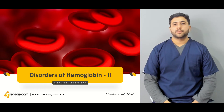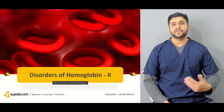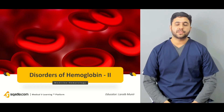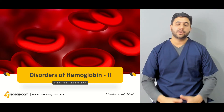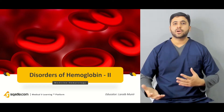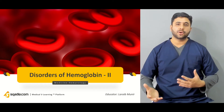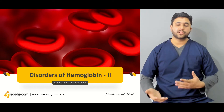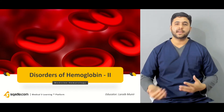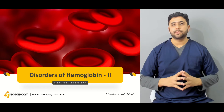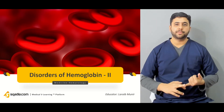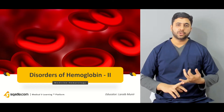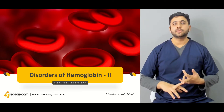We started off by discussing about the hemoglobinopathies. In the first part of our discussion, we started off by discussing about the normal physiology of hemoglobin — how it carries out oxygenation and transportation of oxygen. Then we talked about the various things which can go wrong with hemoglobin: either a structural abnormality, a functional abnormality, or something that leads to abnormal or inadequate production of hemoglobin. We talked about the normal physiology and then we talked about sickle cell disease.